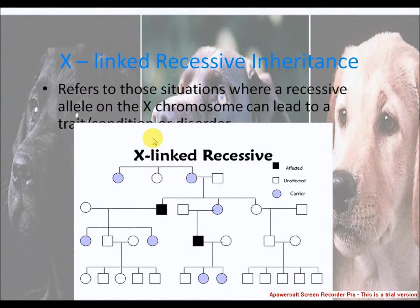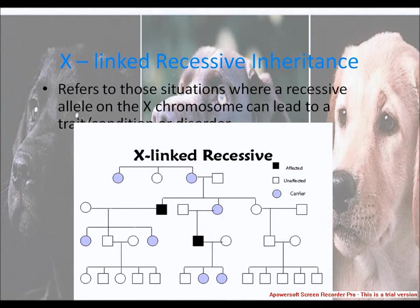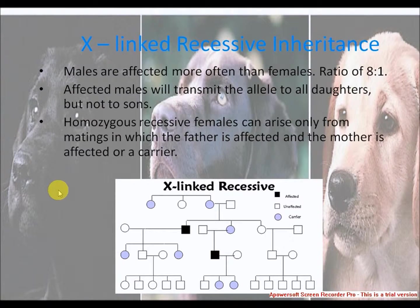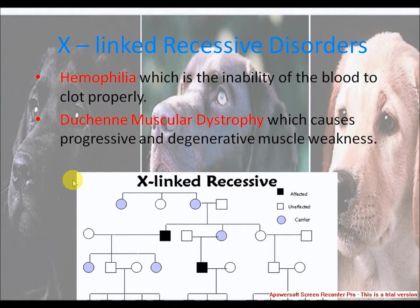X-linked recessive inheritance: most affected individuals are male. Affected males result from mothers who are affected or who are known to be carriers. Heterozygous affected females come from an affected father and an affected or carrier mother. The sons of affected females should be affected. Approximately half the sons of carriers should be affected. X-linked recessive disorders include hemophilia, the inability of the blood to clot properly, and Duchenne muscular dystrophy, which causes progressive and degenerative muscle weakness.